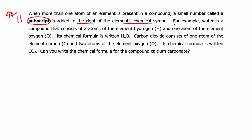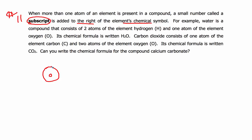For example, water is a compound that consists of two atoms of the element hydrogen and one atom of the element oxygen. So here's oxygen — I'll label that O. And here's hydrogen, labeled H and H. So we have two atoms of hydrogen and one atom of oxygen.